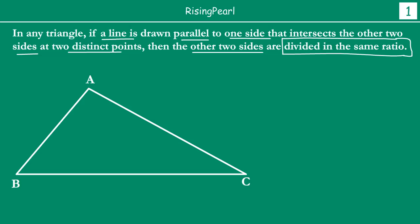If we take a triangle ABC and draw a line DE with the only criteria that DE is parallel to BC, so we have triangle ABC with line DE parallel to side BC. If we have drawn this, then the theorem we learnt in detail in the last webisode tells us that point D and point E divide sides AB and AC respectively in the same ratio.